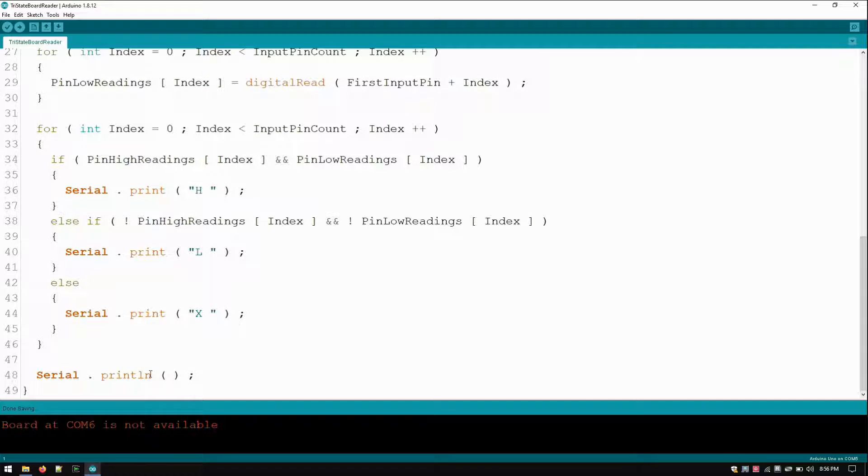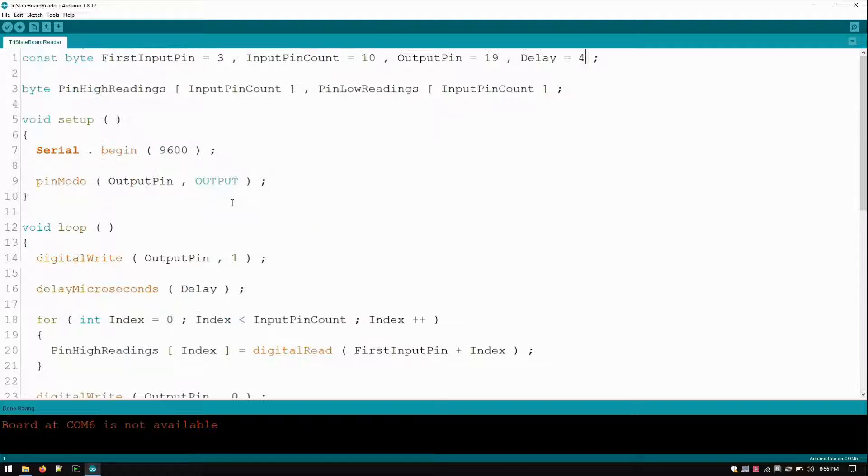And then I just clear the lines. So print does not start a new line on the serial monitor. Print line ends the line. And that's it. That's just the demonstration.